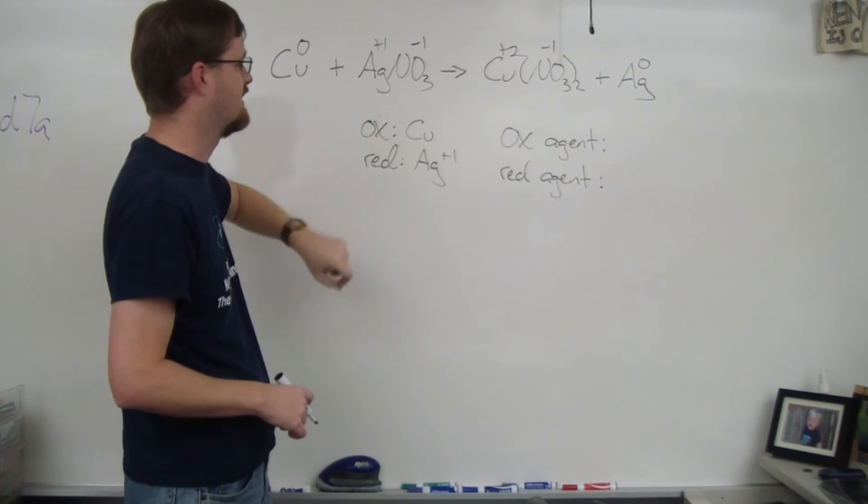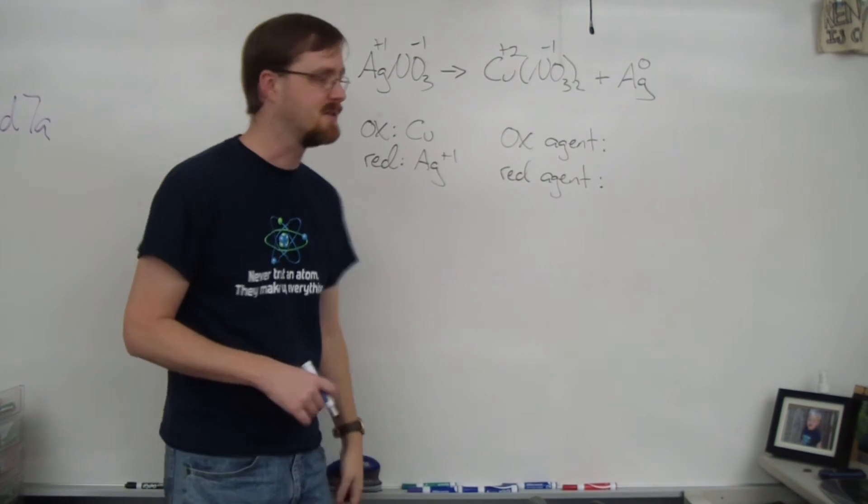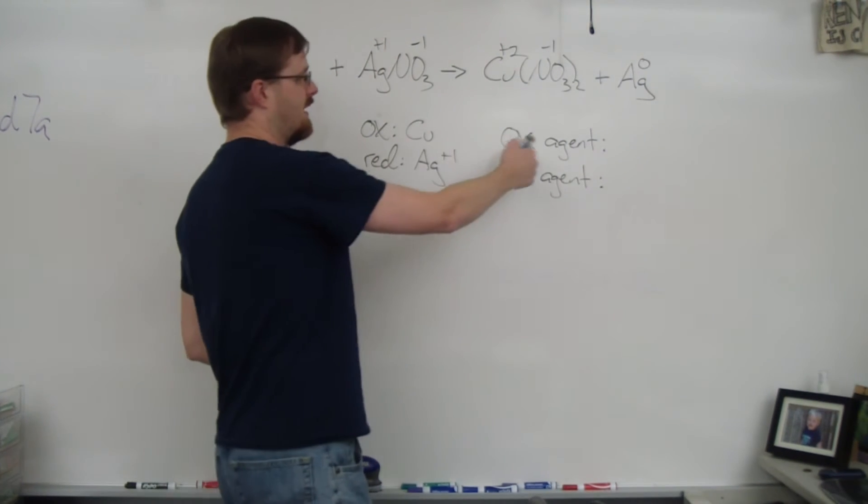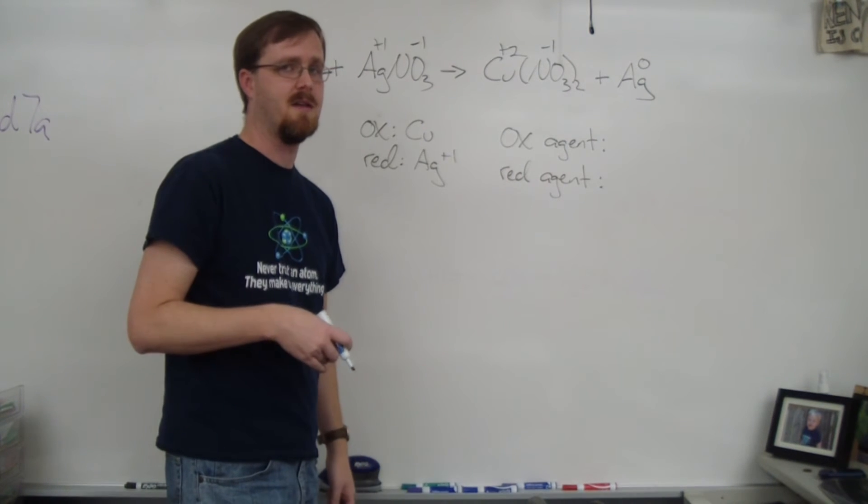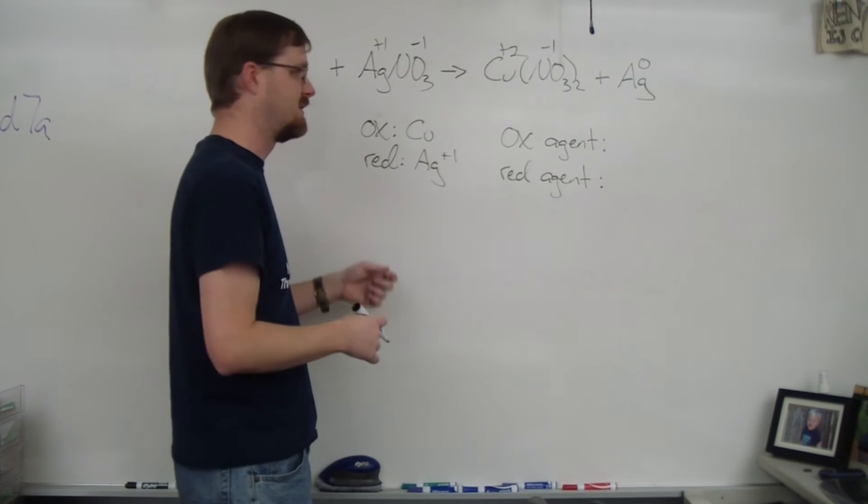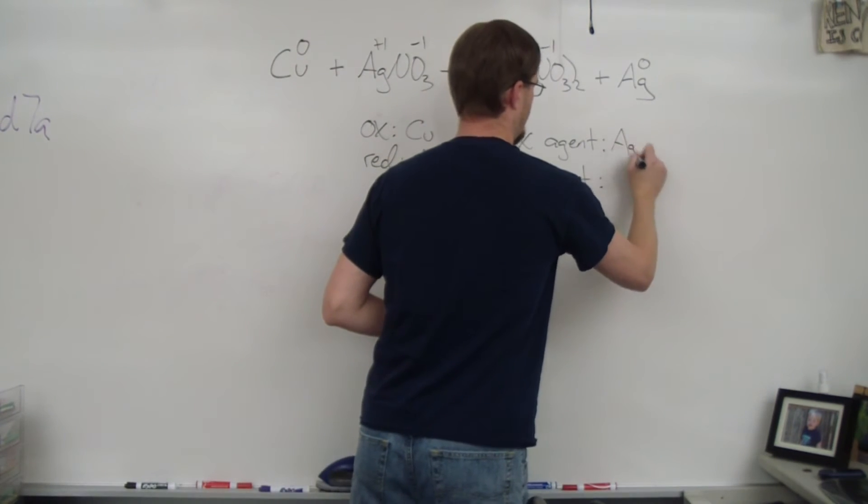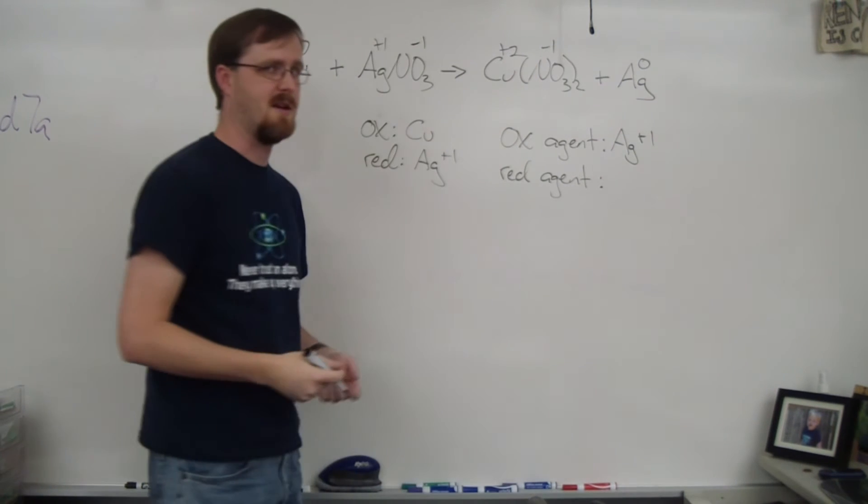Now that we know copper is oxidized and silver is reduced, it's time to find the agents. The oxidizing agent is the one that causes something else to be oxidized. In other words, it's the one being reduced. So silver +1 is the oxidizing agent.